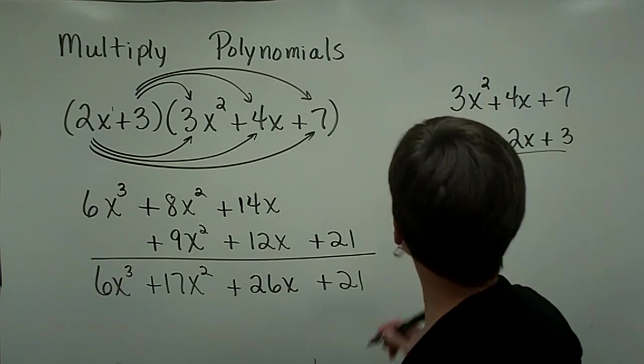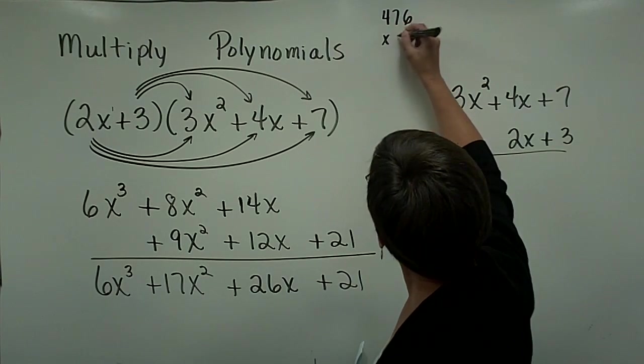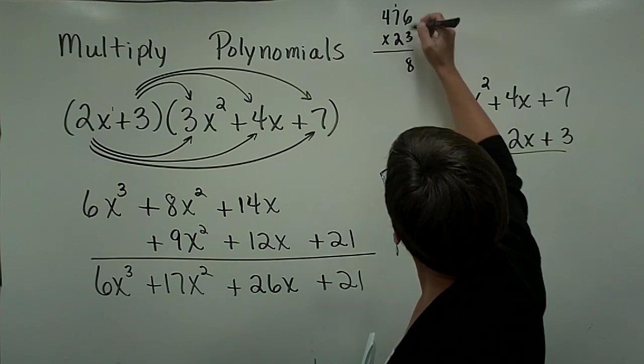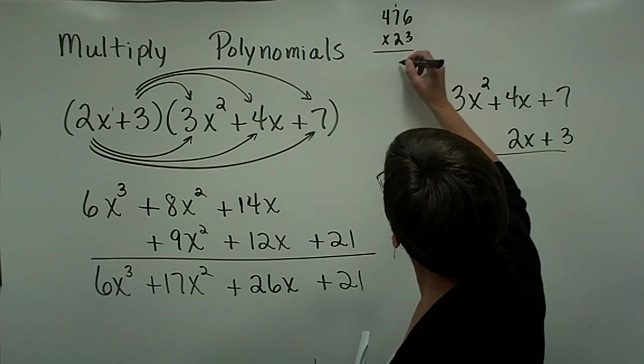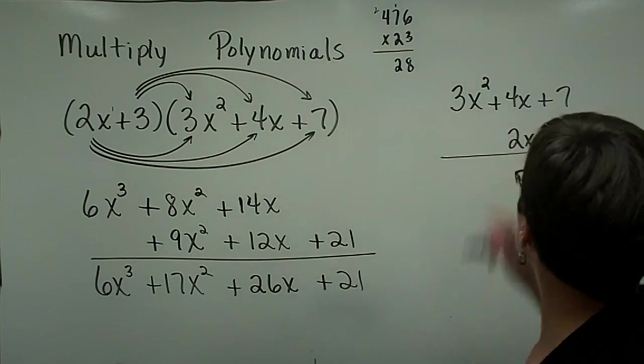Let me see if I can slip this in. You know, 476 times 23. 3 times 6 is 18. Carry the 1. 3 times 7 is 21. Plus the 1 is 22. Carry the 2. That's how I'm going to do this problem.